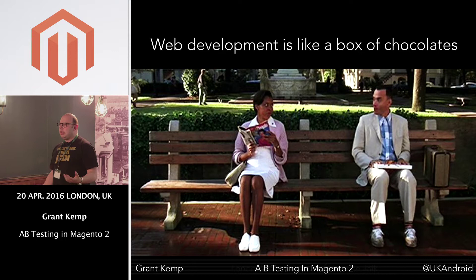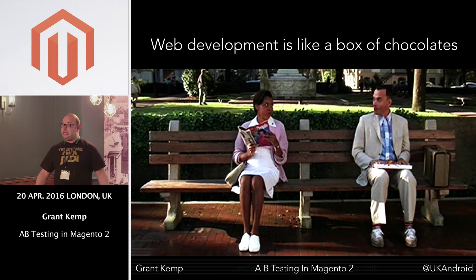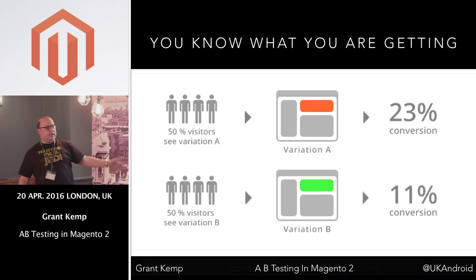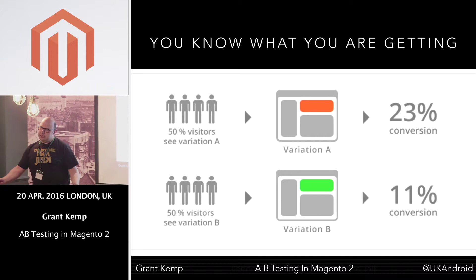Web development's a little bit like — who remembers the Forrest Gump movie? I call it the Forrest Gump book of development. Life's like a box of chocolates, you don't know what you're going to get. Could be amazing, could be no one uses it, could take the server down. The reason A-B testing is amazing is you know what you're going to get. If you send 50% of your people to variation A and 50% to variation B, you know immediately which one is going to make more money. Easy.